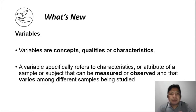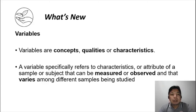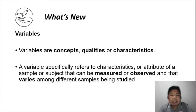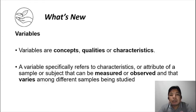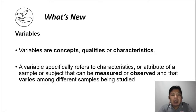Now let's proceed with our topic of discussion for today: variables in research. So what are variables? According to the definitions, variables are concepts, qualities, or characteristics. When we talk about variables, they are the characteristics or concepts or qualities of the subject that you are doing your research on. For example, if you are doing research about a group of students, the variables are the qualities of those students — it can be their age, their grade level, even the place of their birth. Those are the things that we actually measure.